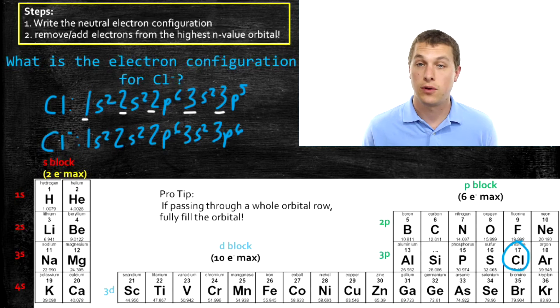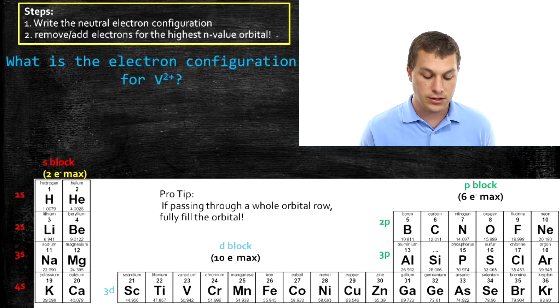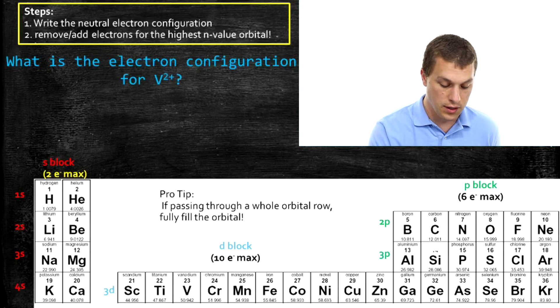And that is the negatively charged chloride ion. Alright, one more example. And this one shows a little bit of a trickier problem. We want to write the electron configuration for Vanadium. Vanadium 2 plus to be specific.